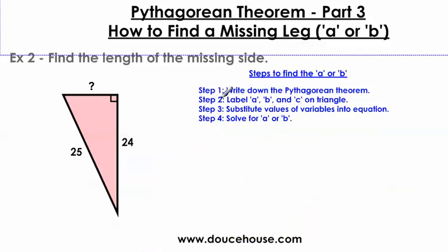Let me do one more problem here just to cement this into your mind. So again, if I look here, I'm going to write down the A squared plus the B squared equals C squared.